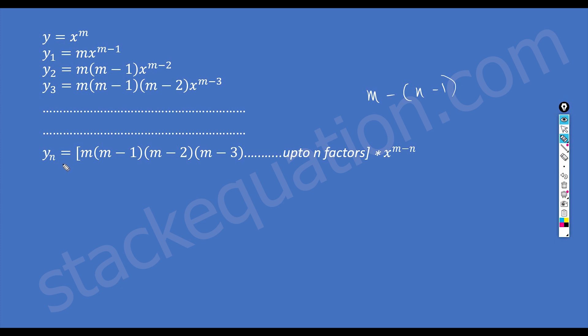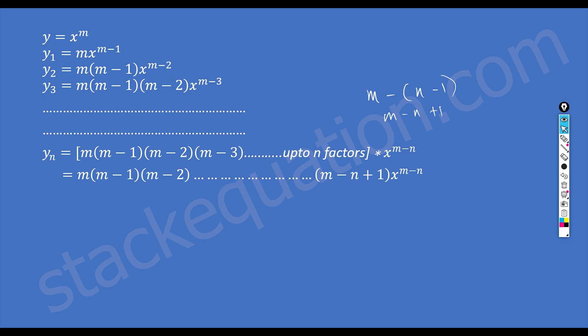When finding the nth derivative, the last term is m minus (n minus 1), which equals m minus n plus 1. So the full formula is m·(m-1)·(m-2)···(m-n+1) into x to the power m minus n.